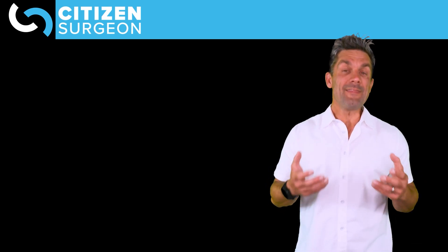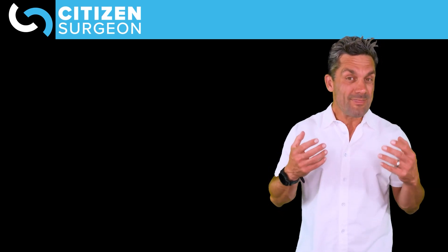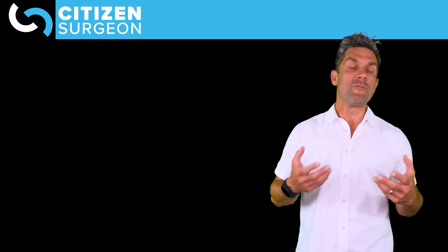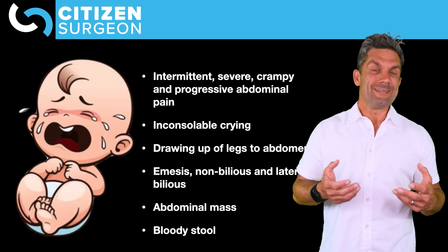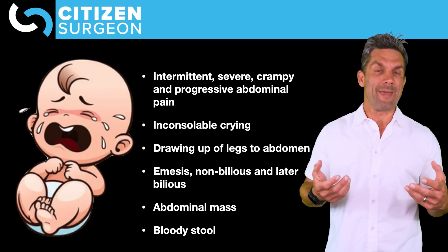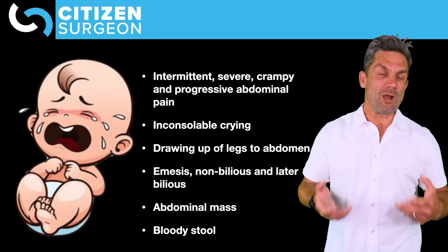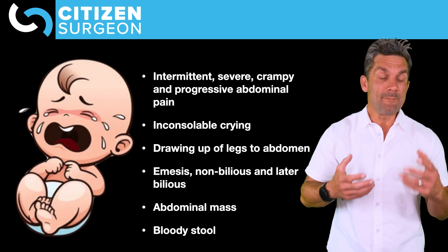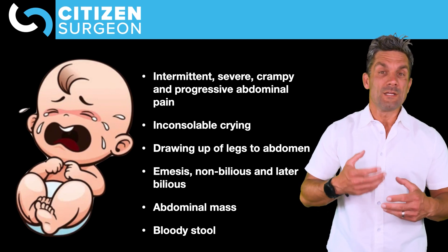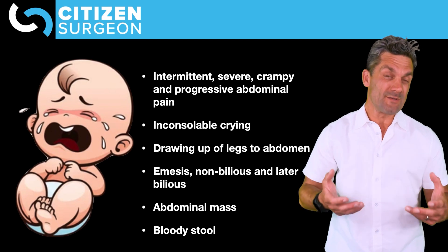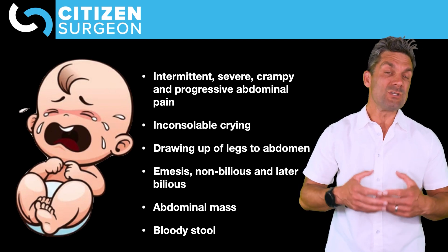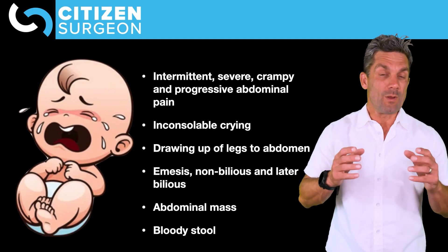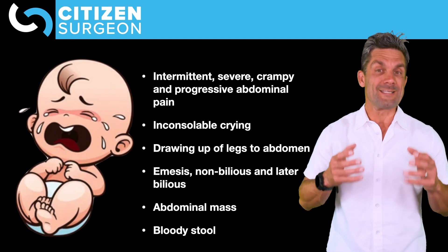At the end of that video we went through the clinical presentation. Quickly reviewing: intermittent, progressive abdominal pain in a crying infant, drawing legs up to the abdomen. They may have emesis — usually non-bilious in the beginning, but can progress to bilious emesis when more severe. You can have an abdominal mass, bloody stool, and currant jelly stool, which we'll discuss in detail during the physical exam.